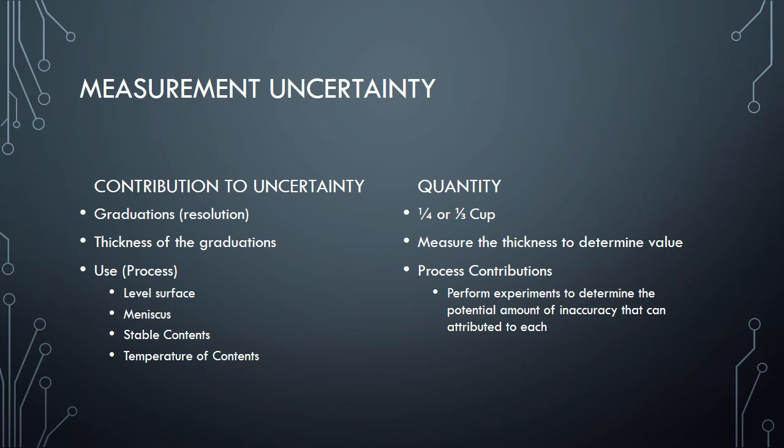When we look at measurement uncertainties, there's these contributions and then there's a quantity associated with that contribution. When we looked at the potential measurement issues with using our measuring cup - like the graduation, the resolution, the distance between the graduations, the thickness of those graduations, and the actual use of the measuring cup itself - we can then go and try to identify some quantities to associate with that. Because those quantities that associate with that will then drive what the value of our measurement uncertainty actually is. In that case, we look at our graduations and they're either a quarter or a third of a cup per graduation. We wanted to figure out what the thickness of those graduations was, so we would measure the actual thickness and determine a volume to associate with the thickness of that line.